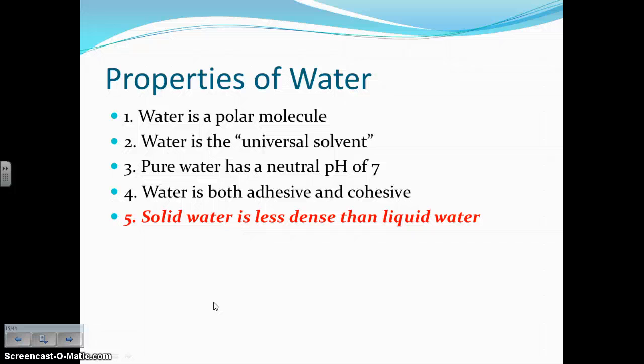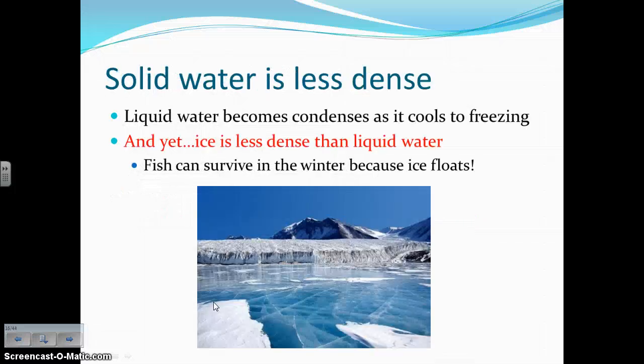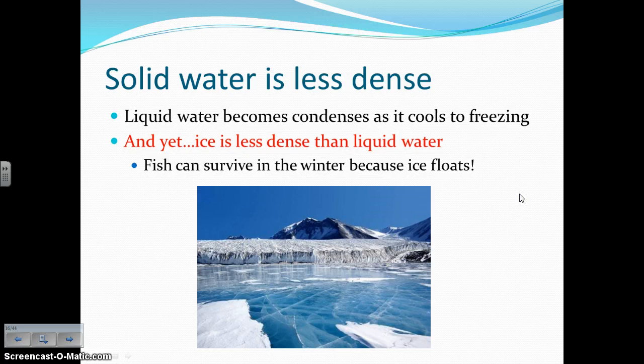The last property is that solid water is less dense than liquid water. As liquid water cools to freezing it does condense, but ultimately frozen water — ice — is less dense than liquid water, which is why ice floats. This is very beneficial to living things: fish and other organisms in lakes and ponds can still live and thrive in winter because the ice floats on top.